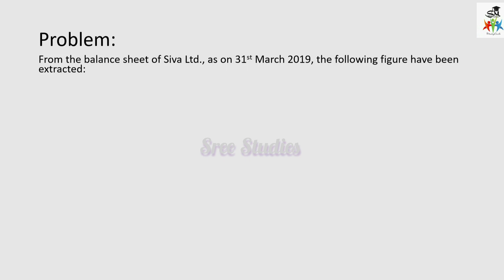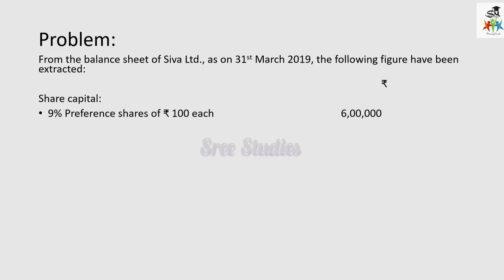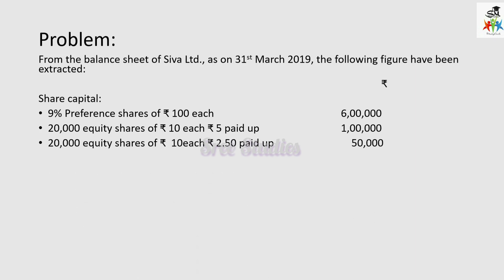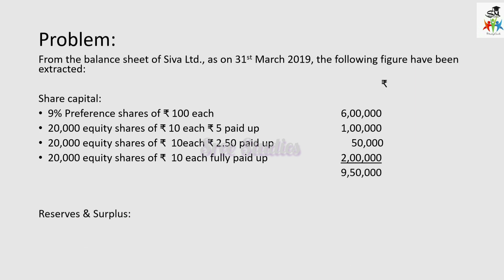The next problem is from the balance sheet of Shiva Limited on 31st March 2019. The following figures have been extracted. Share capital includes 9% preference shares of rupees 100 each, 20,000 equity shares of rupees 10 each with rupees 5 paid up, 20,000 equity shares of rupees 10 each with rupees 2.50 paid up, and 20,000 equity shares of rupees 10 each fully paid up. This involves partly paid up shares with different denominations.